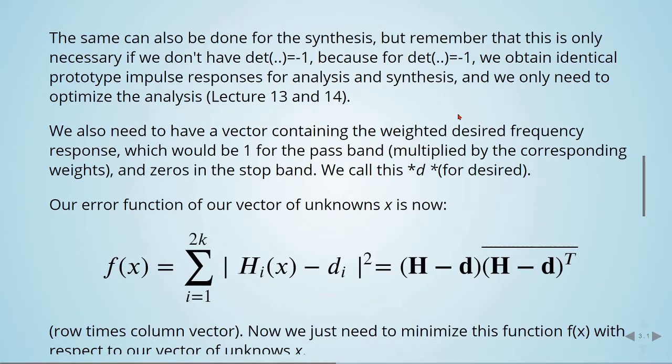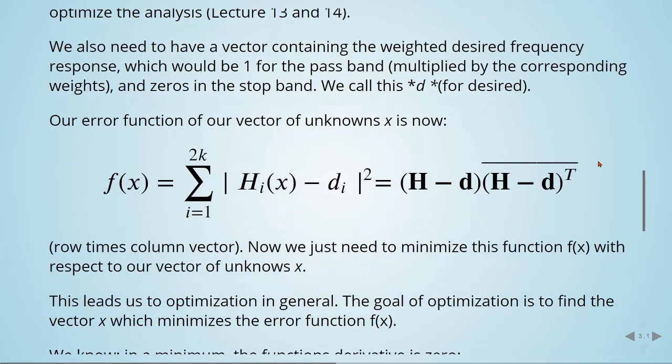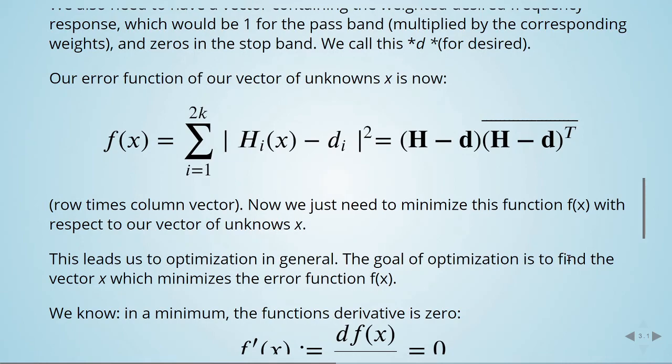When we have all of this, our error function of our vector of unknowns x will be, for example, this equation here (a row times column vector). Now we just need to minimize this function f(x) with respect to our vector of unknowns x. This leads us to optimization in general. The goal of optimization is to find the vector x which minimizes the error function f(x).